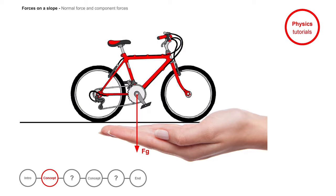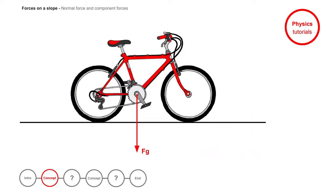In other words, the ground is resisting the pull of gravity. This resisting force is called the normal force. When you draw this normal force, it is always exactly perpendicular to the ground.